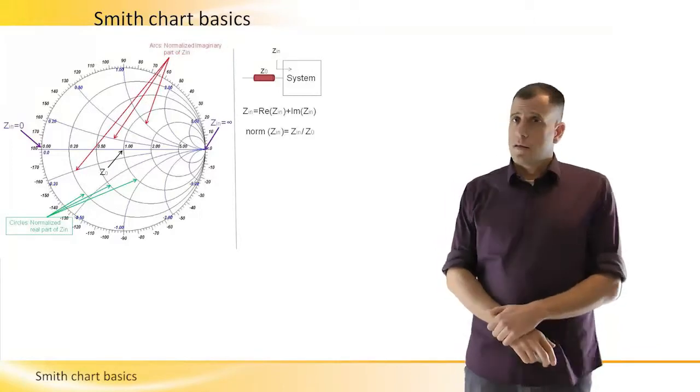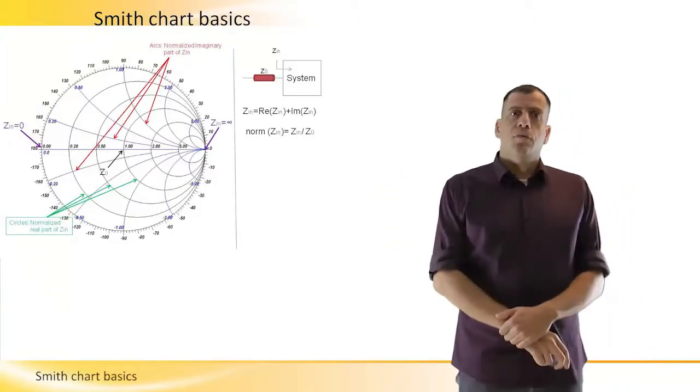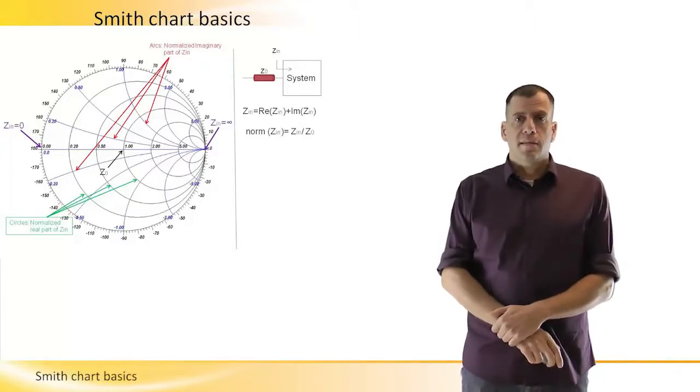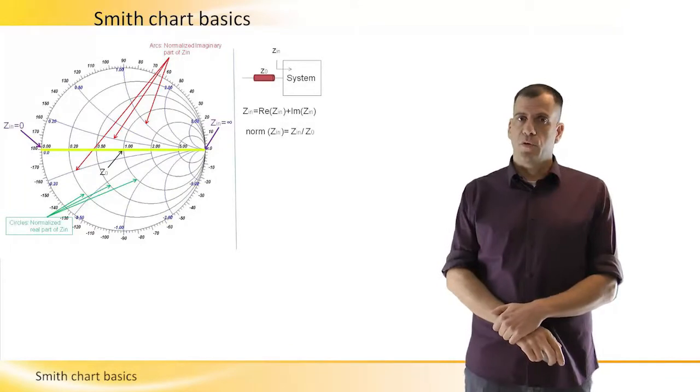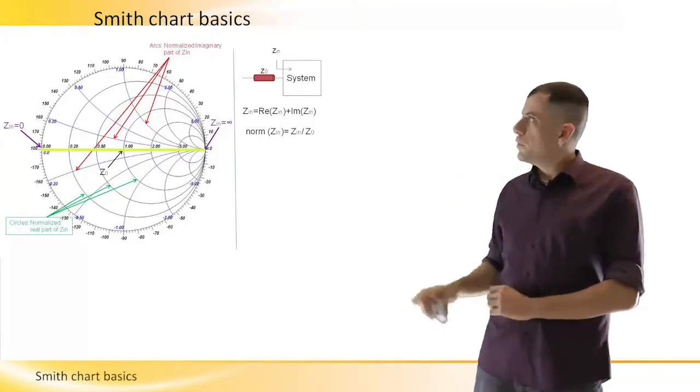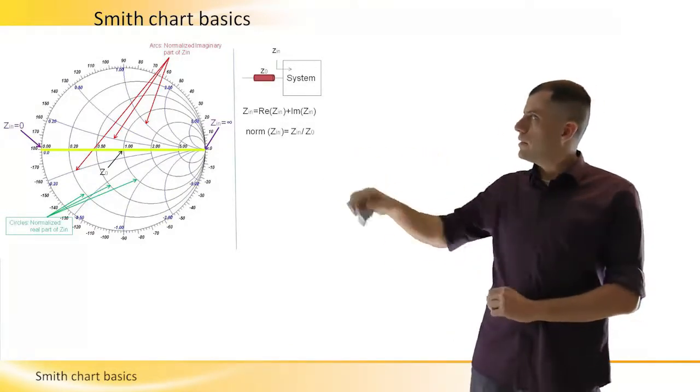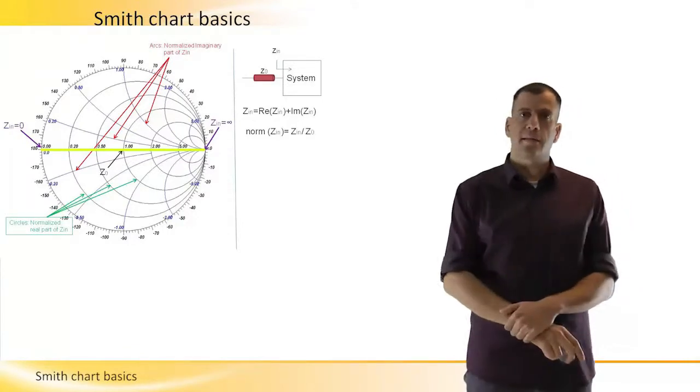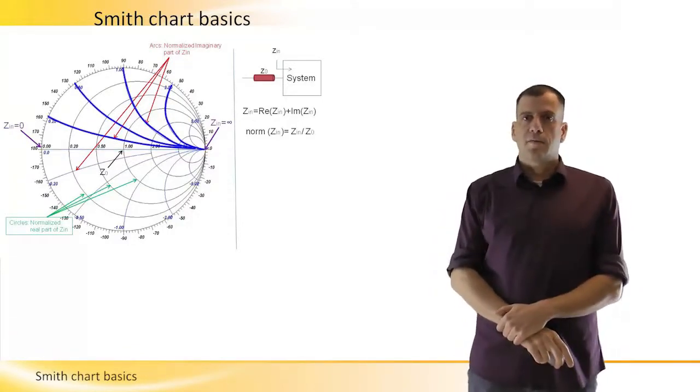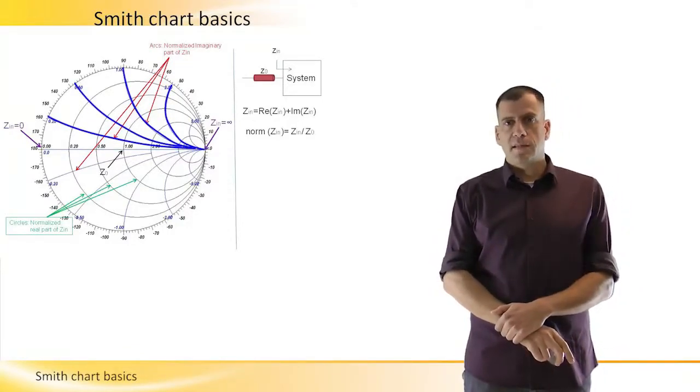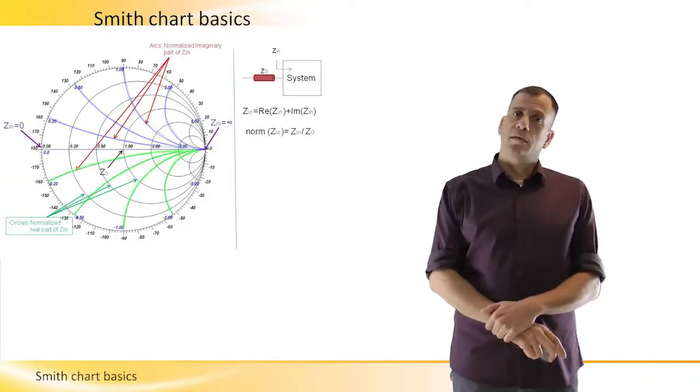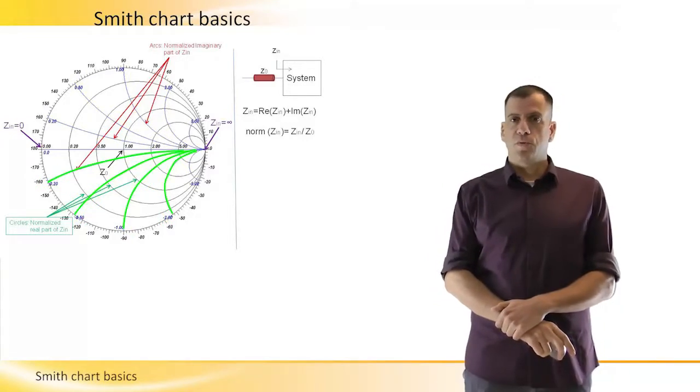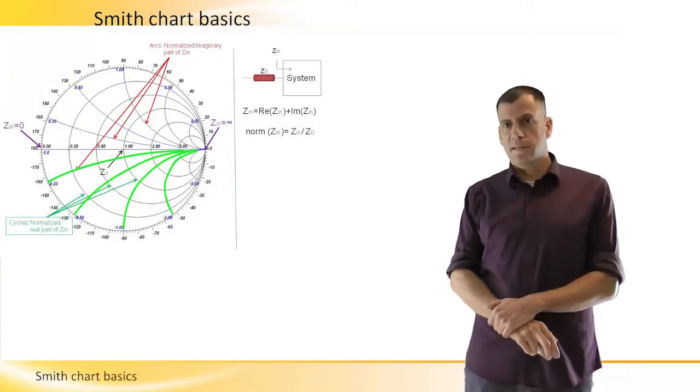The arcs on the Smith chart represent the reactance. The horizontal line represents the reactance zero, meaning every point along the horizontal line has zero reactance. The upper arcs represent the positive reactance that we usually call inductive, and the lower arcs represent the negative reactance, which we usually call capacitive.